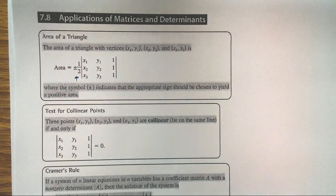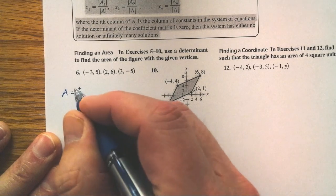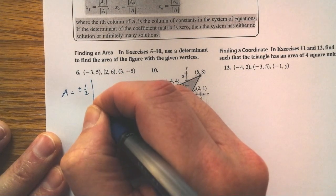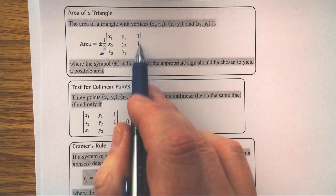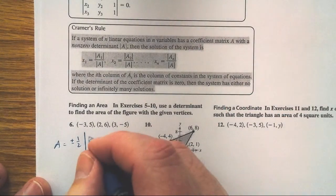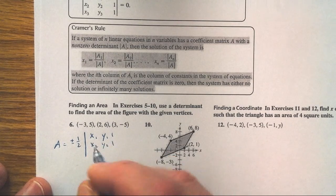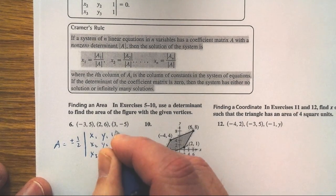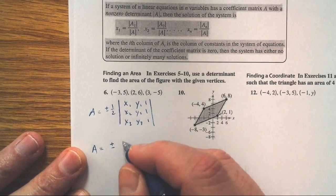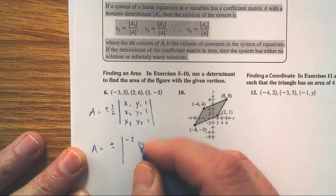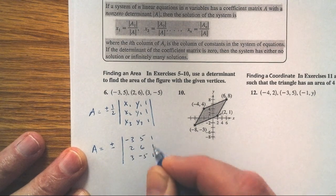This gives us our area. The formula is: area equals plus or minus one-half times the determinant with ordered pairs augmented with ones — x1, y1, 1; x2, y2, 1; x3, y3, 1. In this case, A equals plus or minus the determinant of: negative 3, 5, 1; 2, 6, 1; 3, negative 5, 1.